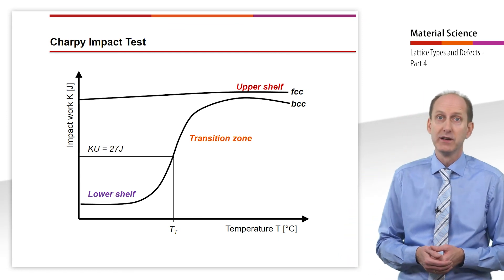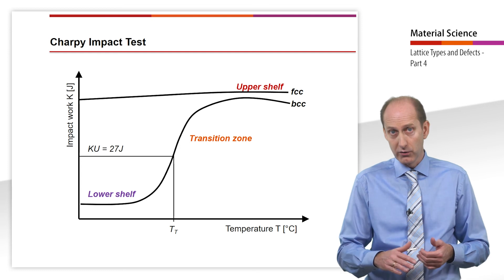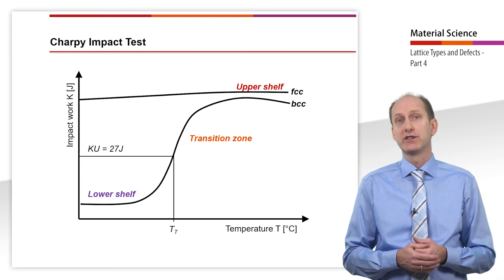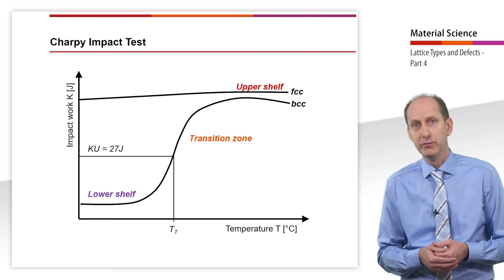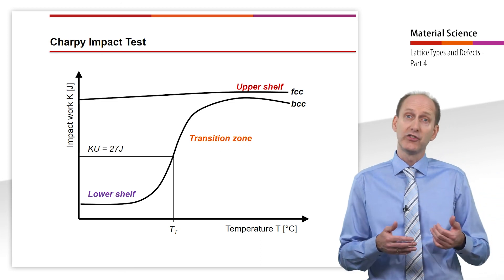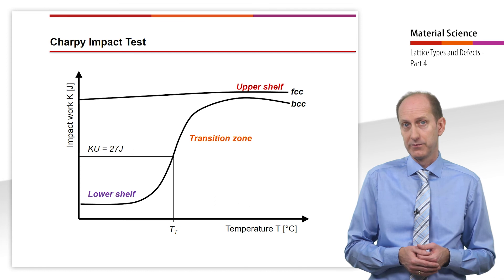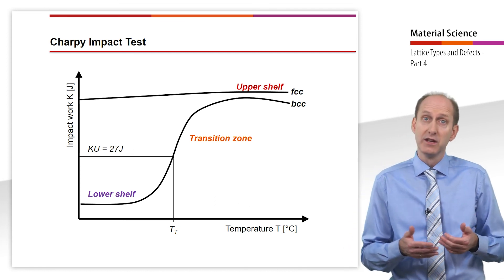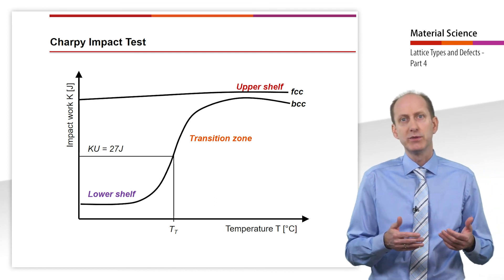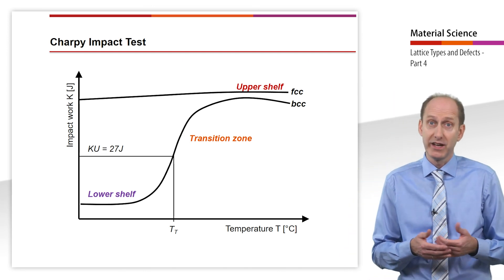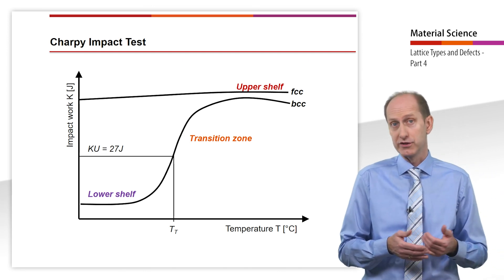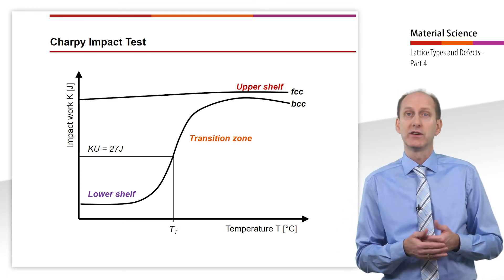Ductile fractures occur in the upper shelf. The lower shelf shows lower notch toughness values at low temperatures. The material has a smooth fracture, that is to say, this leads to brittle fracture. The transition zone shows the transition range between upper and lower shelf. The measured values are scattered extensively in the transition zone. Mixed fractures occur here.